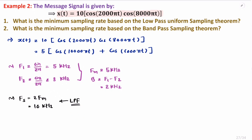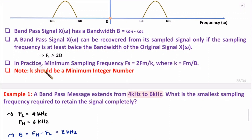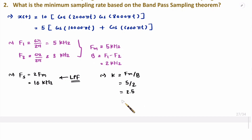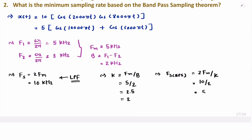But when you talk about band pass signals, first you need to identify the value of k. k equals FM divided by B, where FM is 5 and B is 2, so k equals 2.5. But as I told you, k should be the minimum integer number. So instead of 2.5, we consider k equals 2. Now we calculate the sampling frequency for band pass signals: fs equals 2FM divided by k, which is 2 times 5 divided by 2, giving a sampling frequency of 5 kilohertz for the band pass signal.